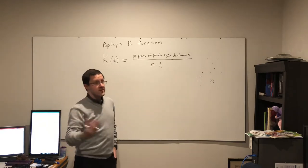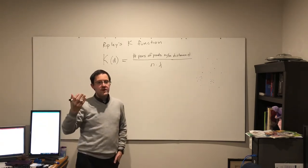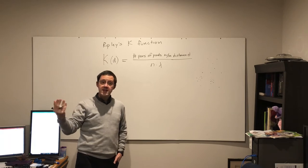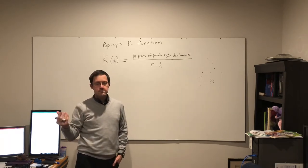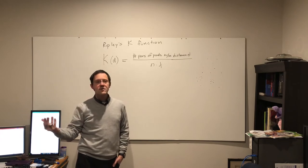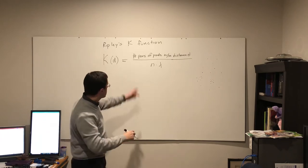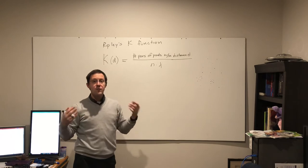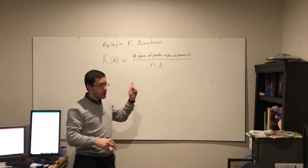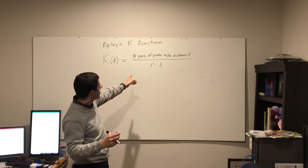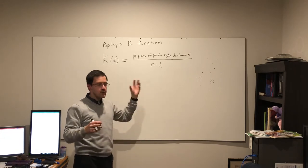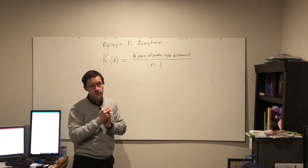Basically we count up how many pairs of points are within that distance d of each other, whether they are the nearest neighbor or not. And again, divide by the number of points times the density. So that part is the same as with the R function. But now instead of just looking at the nearest neighbor, I'm looking at all of them within a particular distance threshold.